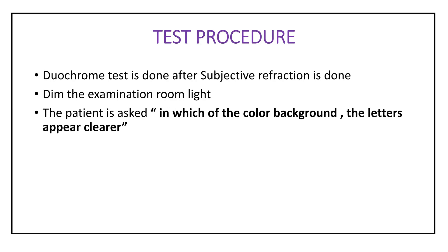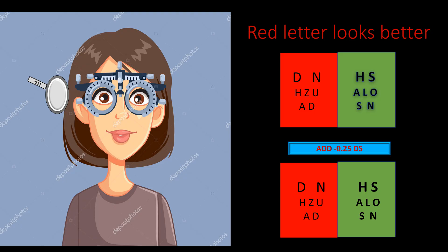The Duochrome test is ideally done after subjective refraction is completed. The room lights are dimmed for better appreciation. The patient is asked: 'In which color background do the letters appear sharper, darker, and clearer?' — either the red or the green background.